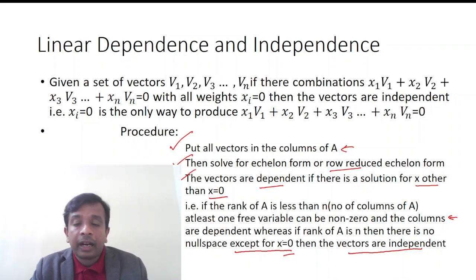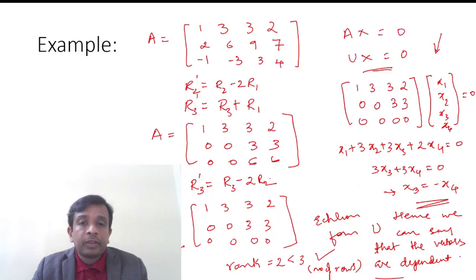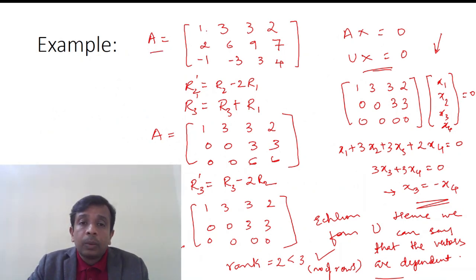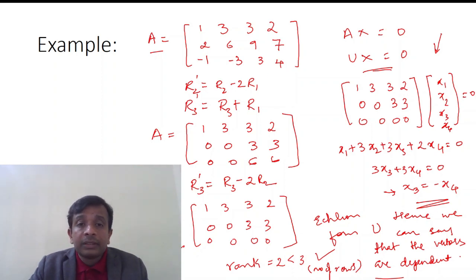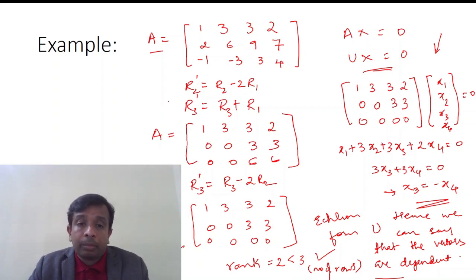Let us work through a problem to understand how linear dependence and independence works. In this example, matrix A is (row-wise): 1 3 3 2 / 2 6 9 7 / -1 -3 3 4. Viewers may recognize this matrix from earlier videos.